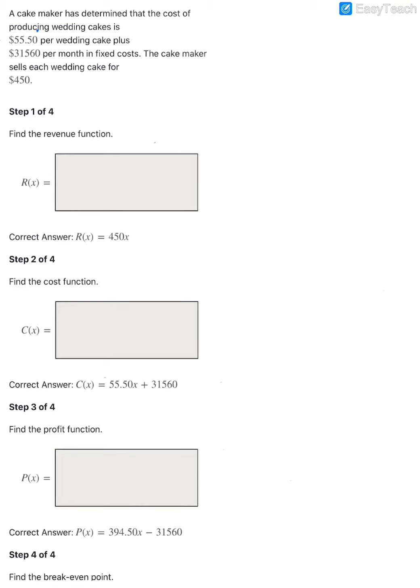We are going to look at some applications that relate to revenue, cost, and profit functions for a business. In this first example, we have a cake maker who has determined that the cost for producing wedding cakes is $55.50 per wedding cake plus $31,560 per month in fixed costs.